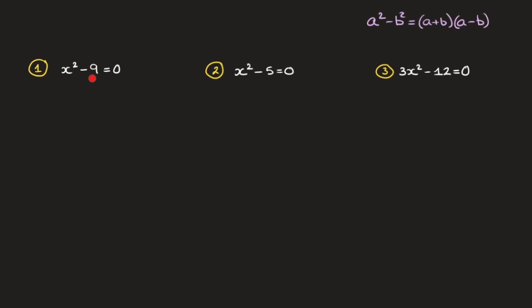We need to solve x squared minus 9 equals 0. The trick is to make sure that the left hand side of this equation is written as a difference of two squares. Using the fact that 9 can be thought of as 3 squared, we can rewrite this as x squared minus 3 squared equals 0. Now we can compare this to a squared minus b squared and use the formula to write the left hand side in factored form, giving us x plus 3 times x minus 3 equals 0.